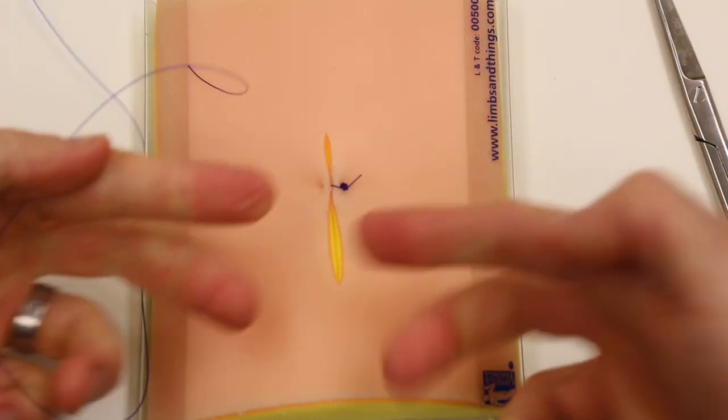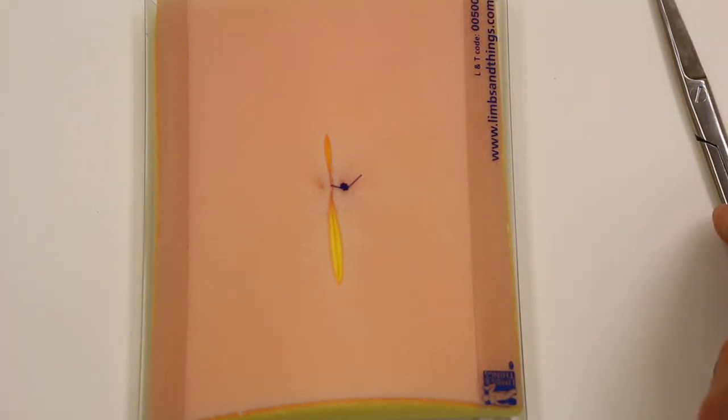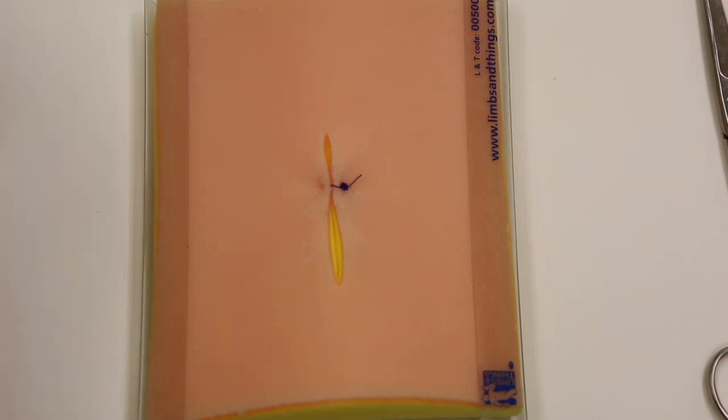And since you have two full strands going both ways for each knot, the incision is fairly well supported. Kind of divide tension between there. Unlikely to tear.